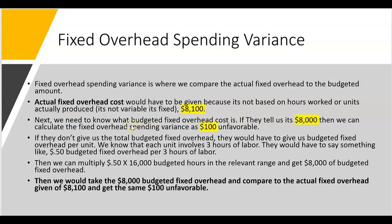If the budgeted fixed overhead cost is $8,000, we can calculate the fixed overhead spending variance as $100 unfavorable. Why? Because if we were supposed to spend only $8,000 on fixed overhead but the actual cost was $8,100, we'd have $100 of unfavorable fixed overhead spending.